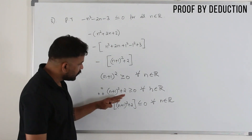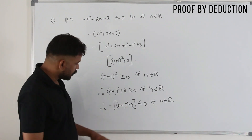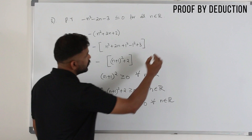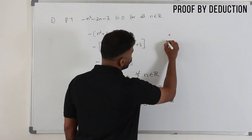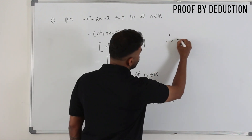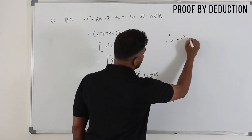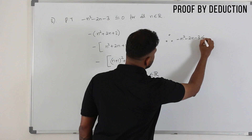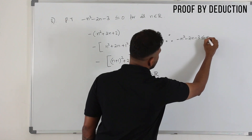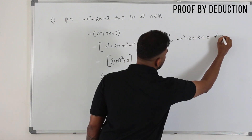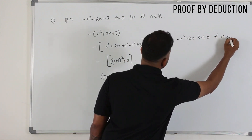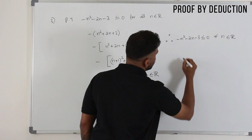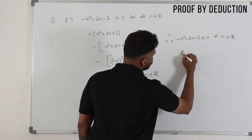Then write the conclusion step. Therefore, minus n squared minus 2n minus 3 is less than or equal to 0 for all n belonging to R. Hence proved.